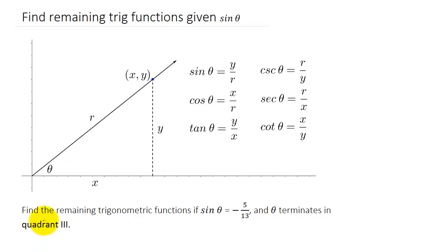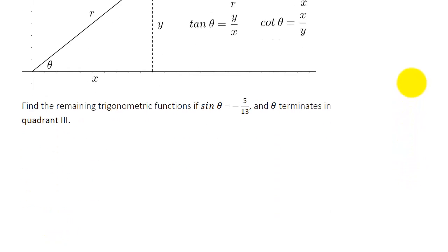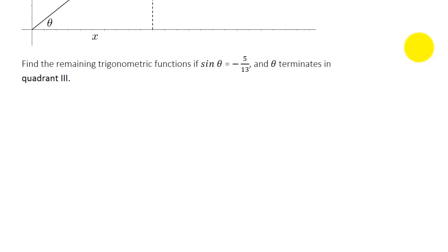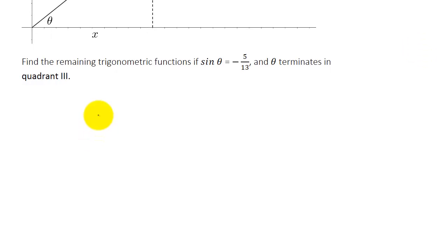Find the remaining trigonometric functions if sine theta is equal to negative 5 over 13 and theta terminates in quadrant three. For this problem they're telling us that theta is in the third quadrant, so it's best to go ahead and sketch a graph and draw a picture of it.